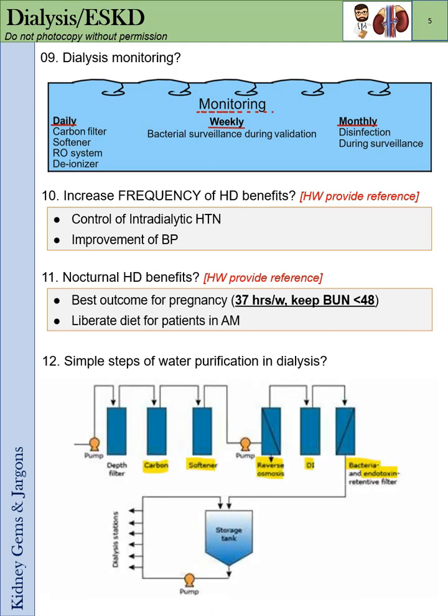Simple steps of water purification and dialysis: you start with a carbon filter, then the softener, then reverse osmosis, then the deionizer, and finally the bacteria and endotoxin retention filter.